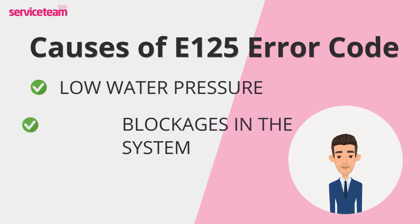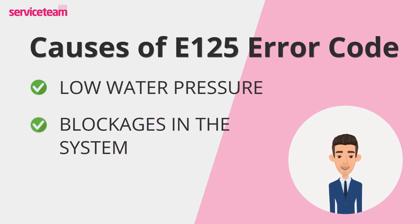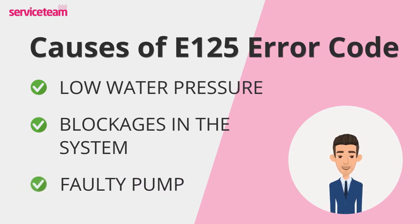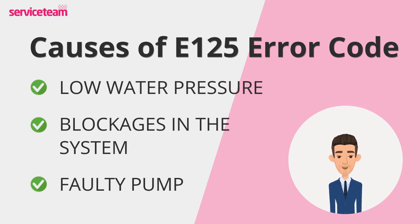Over time, limescale, sludge, or debris can build up in the pipes or heat exchanger, clogging the system and reducing water flow. The pump is like the heart of your boiler system, circulating water where it's needed. If it's faulty, not working well, or stops completely, the E125 fault is likely to appear.